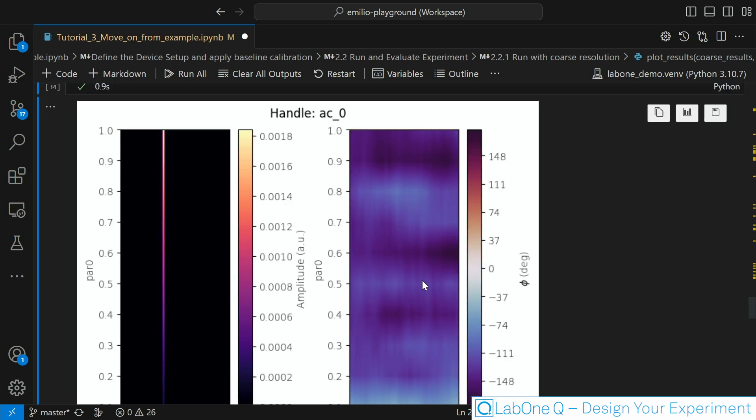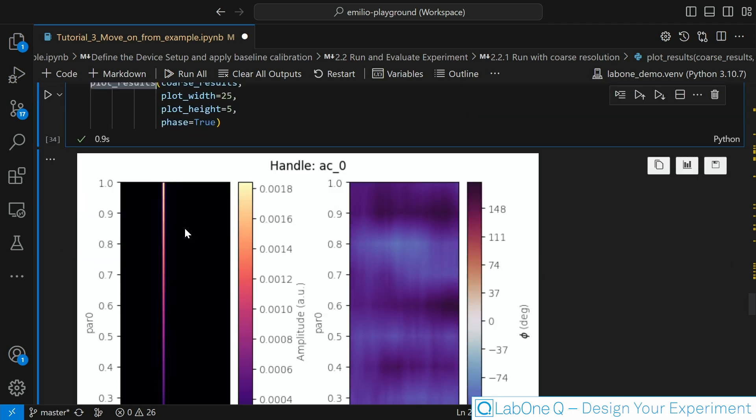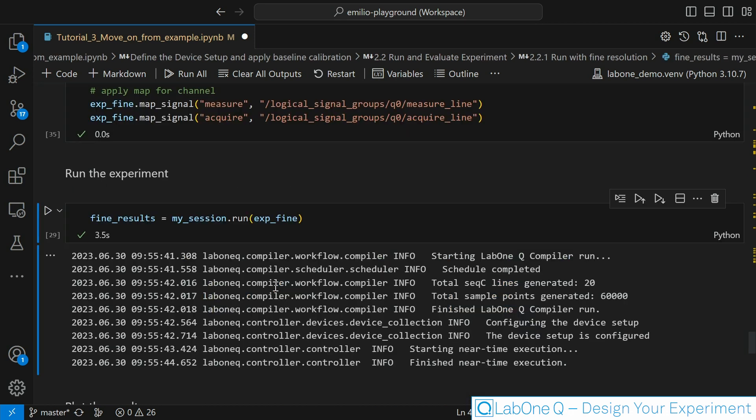And we are seeing at the same time how the phase is changing in this 2D space. Notice how our function plot result automatically detected that the result is now a 2D object and is adapting the plotting automatically.